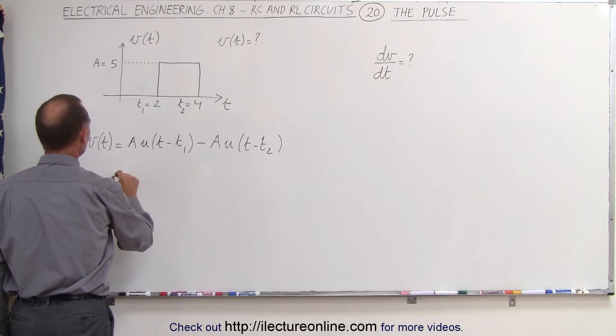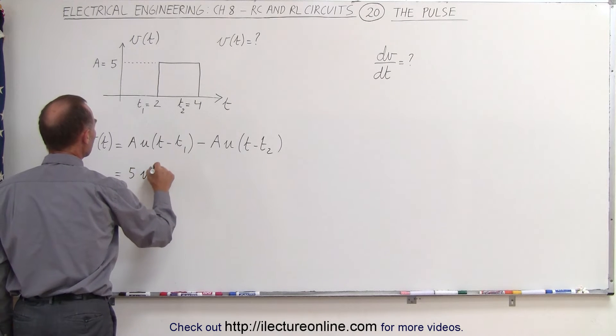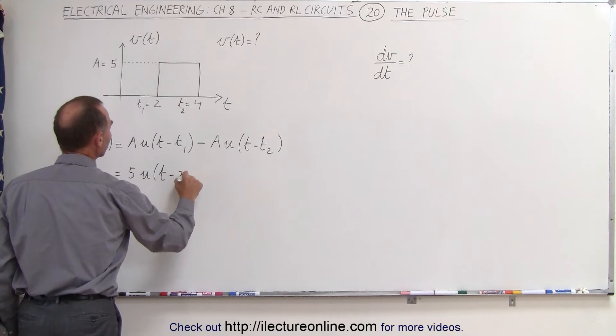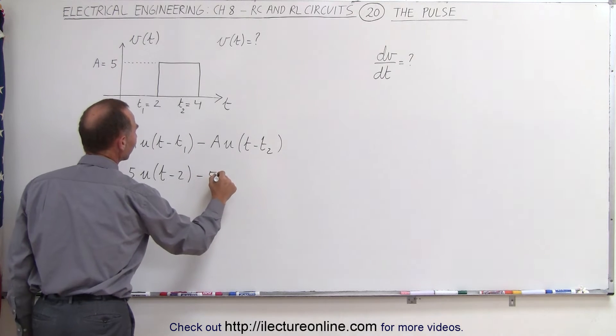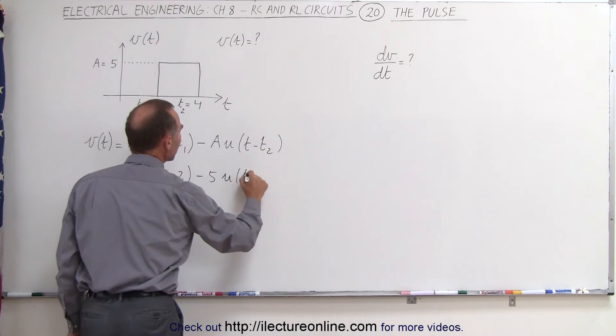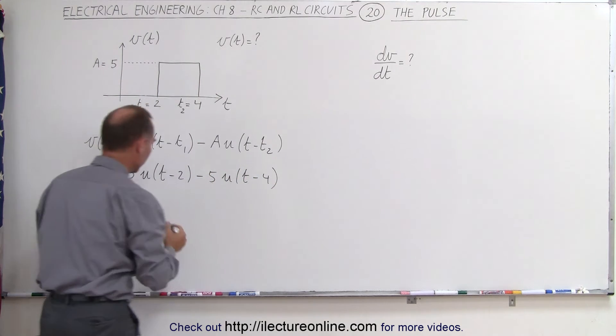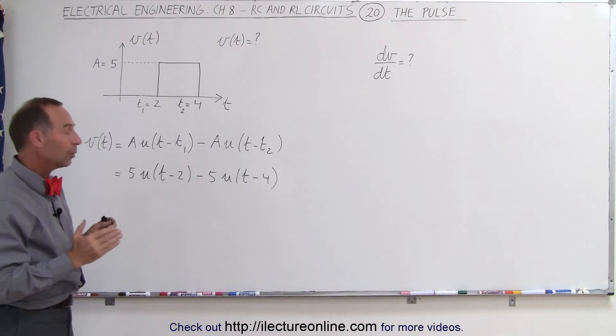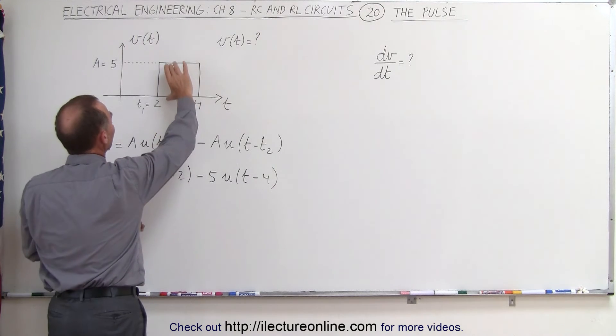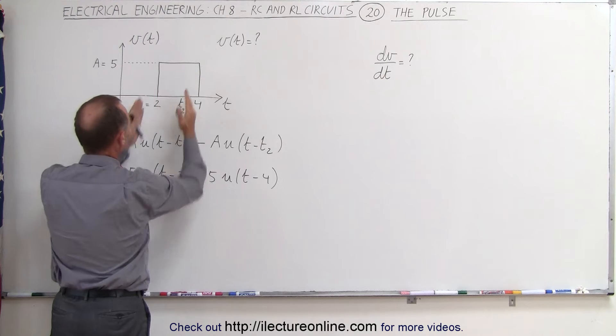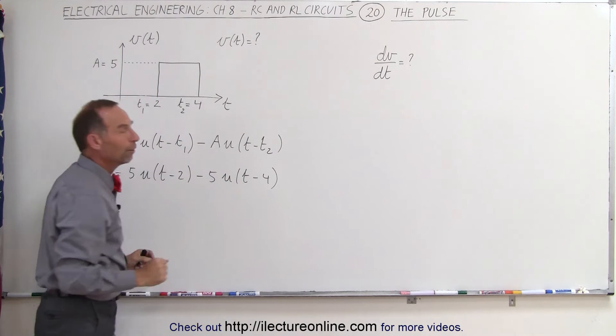If we plug in the numbers, this would be equal to five times u times t minus two, minus five times u of t minus four. And so this then would allow a pulse that has a magnitude of five for the two seconds between time equals two to time equals four.